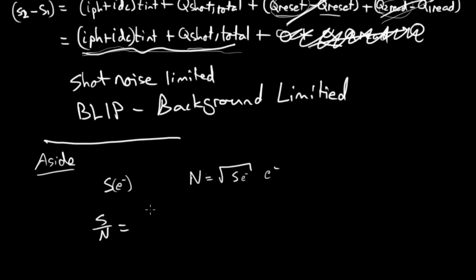So our signal to noise ratio equals the signal over the square root of the signal equals the square root of the signal. So if you're background limited, if you're shot noise limited, as you increase your signal level, your signal to noise ratio will go up as the square root of your signal.